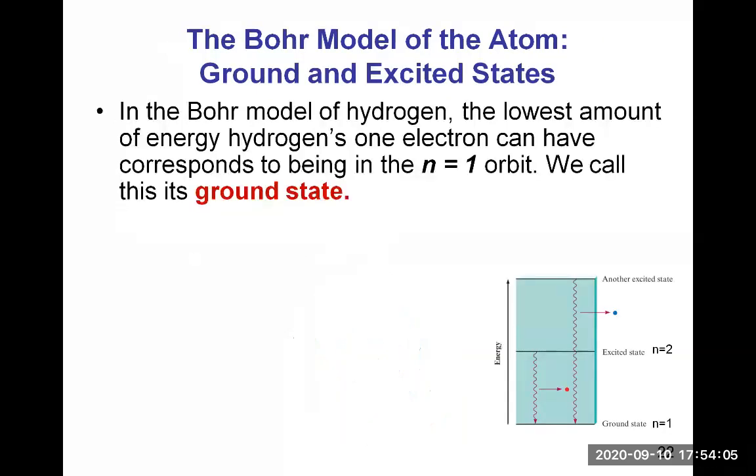In the Bohr model of the hydrogen atom, the lowest amount of energy hydrogen's one electron can have corresponds to being in the n equal one orbit. We call this its ground state. In the schematic here, we have energy going up. n equals one represents the ground state, the first shell after the nucleus.